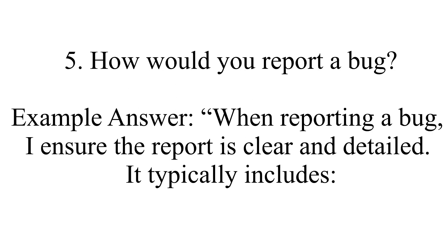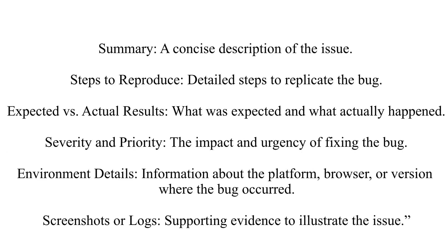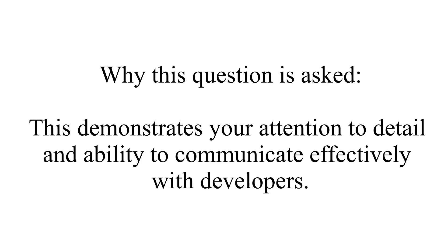Question five: How would you report a bug? When reporting a bug, I ensure the report is clear and detailed. It typically includes: summary — a concise description of the issue; steps to reproduce — detailed steps to replicate the bug; expected versus actual results — what was expected and what actually happened; severity and priority — the impact and urgency of fixing the bug; environmental details — information about the platform, browser, or version where the bug occurred; and screenshots or logs — supporting evidence to illustrate the issue. This demonstrates your attention to detail and ability to communicate effectively with developers.